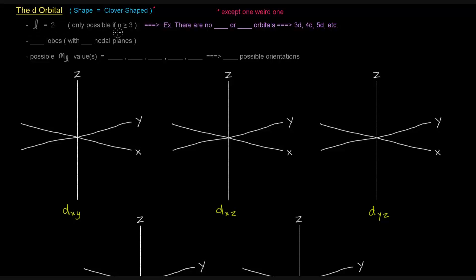And this is only possible if the n value is greater than or equal to 3. There is no 1d orbital, and there's no 2d orbital. There's only 3d, 4d, 5d, so on and so forth.